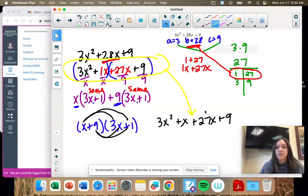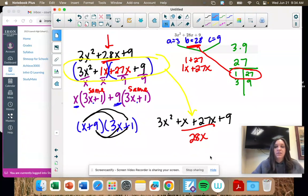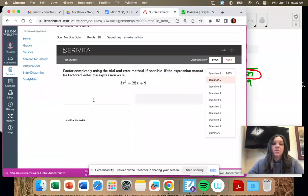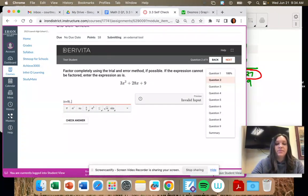this is this. These are the same. That's why we have to group that way. And then the middle two combine to 28X. So that does work. X plus 9, 3X plus 1.